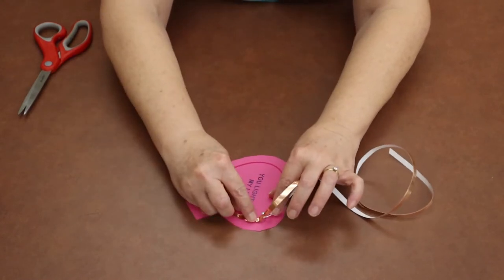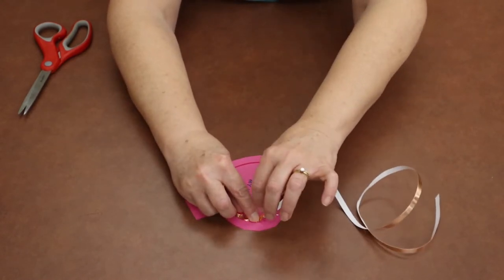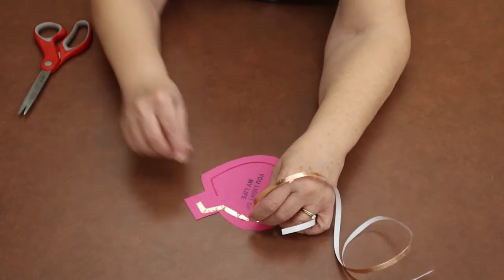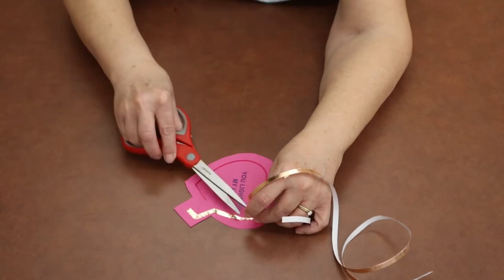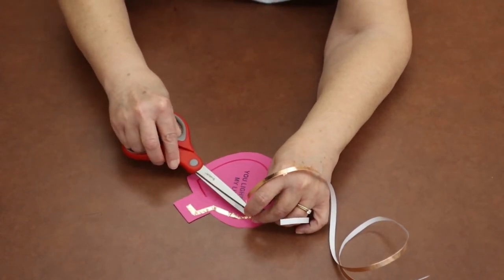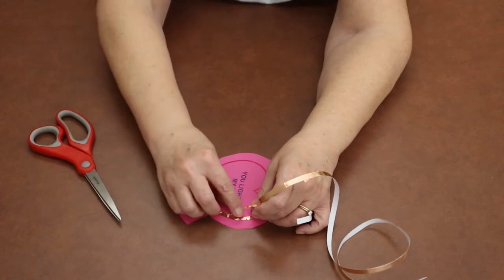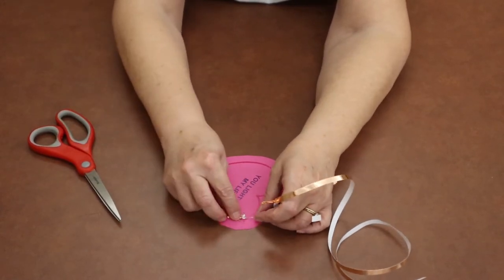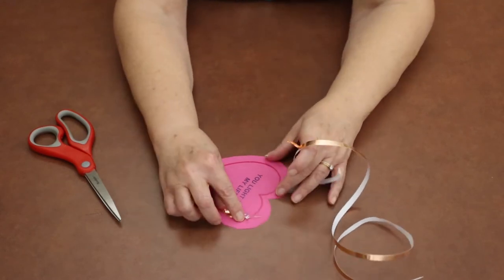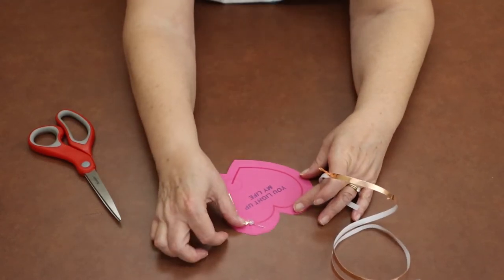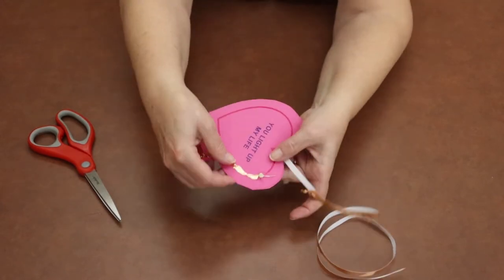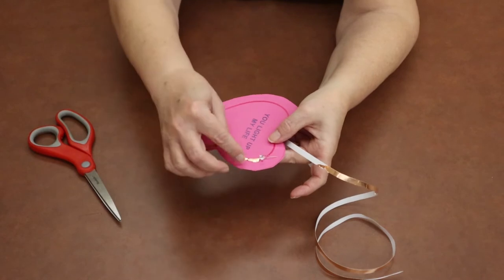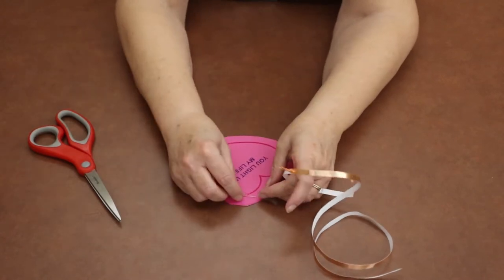So you want to press it down really good and then you will cut right here so that your tape ends right there, right next to the light bulb. And then make sure that, I don't know if you can see the little bump here where the leg of the light is, but make sure that's covered really well.